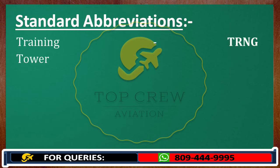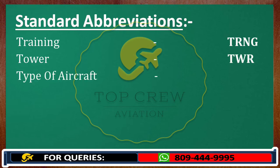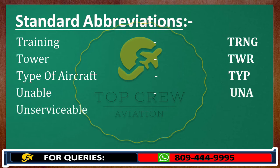Tower: TWR. Type of aircraft: TYP. Unable: UNA. Unserviceable: US.